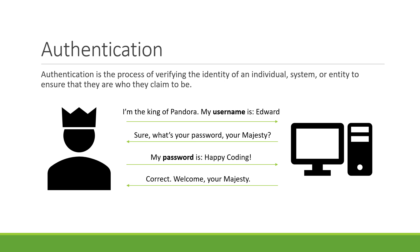In the diagram, there's a dialogue: the client says 'Hi server, I'm the king of Pandora, my name is Edward.' The server responds 'Sure, what's your password, majesty?' The king replies 'My password is happy coding.' The server then verifies the username and password against the database. If they match, the server says 'Correct, welcome!' — that's authentication.